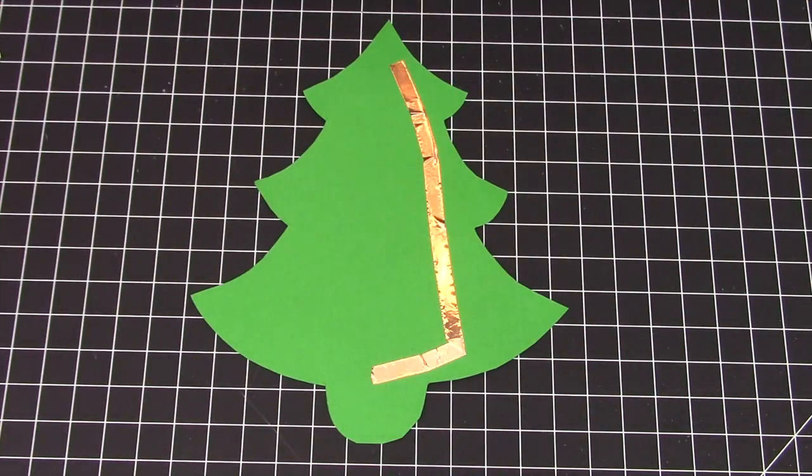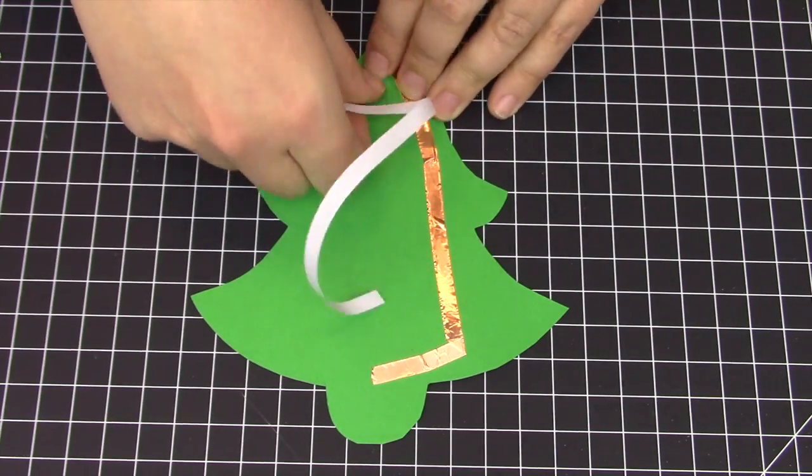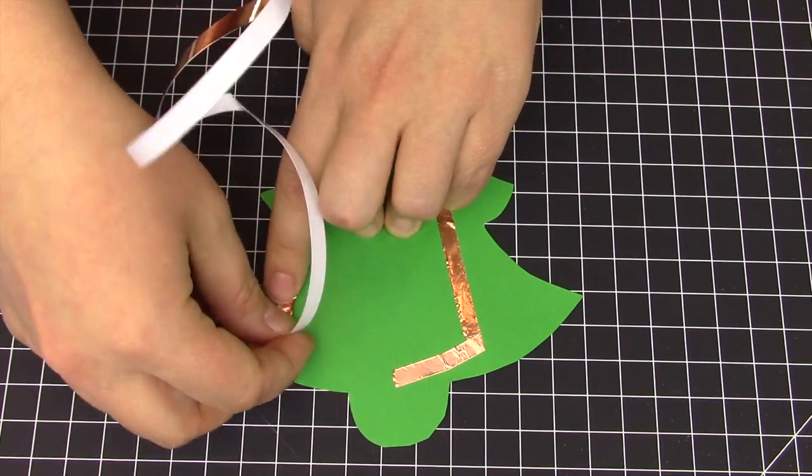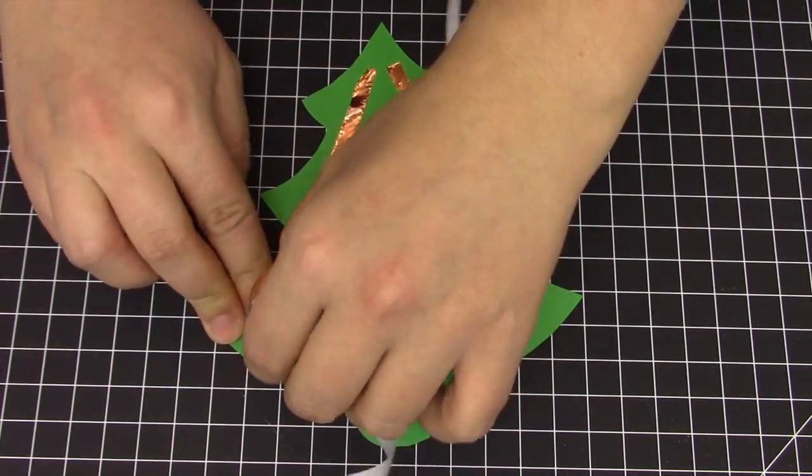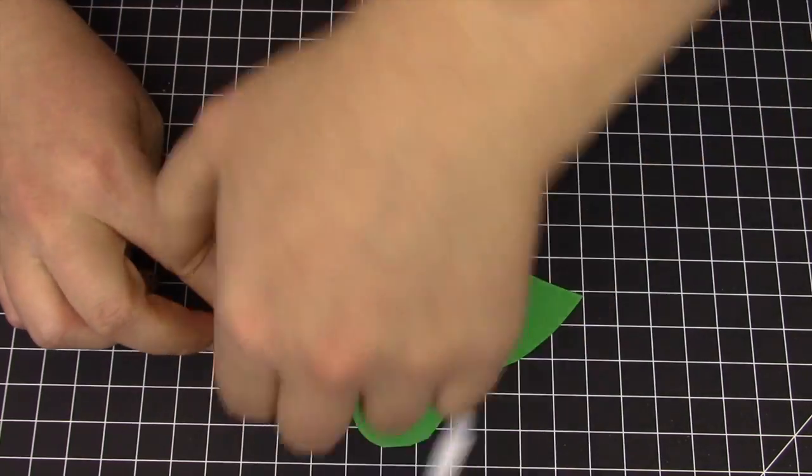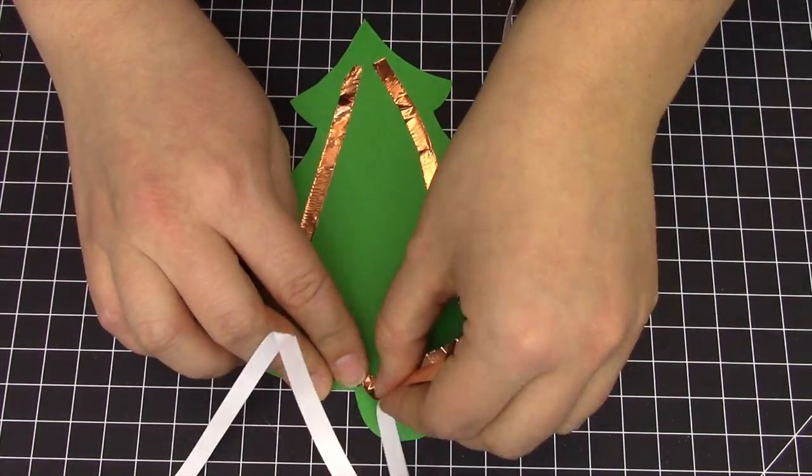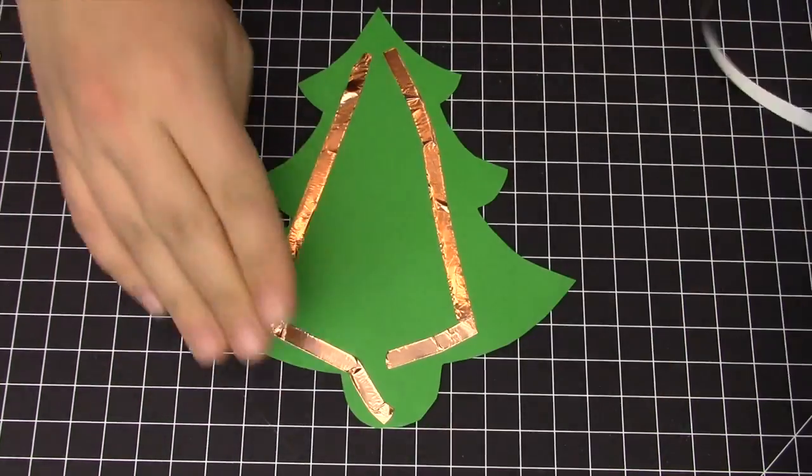Run another strip of conductive tape along the left side of your tree, but make sure they do not touch. Again, bend this one at the bottom, making a continuous strip, and then run it along the side to the bottom of the battery tab. Make sure neither sides touch.